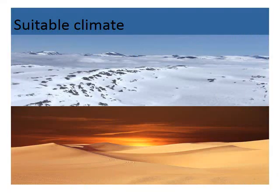The next factor determining the location of settlements is suitable climate. Settlements usually develop and grow in places where the climate is suitable or pleasant to live in. Extremely hot, cold, wet, or dry places are not attractive settlement sites.